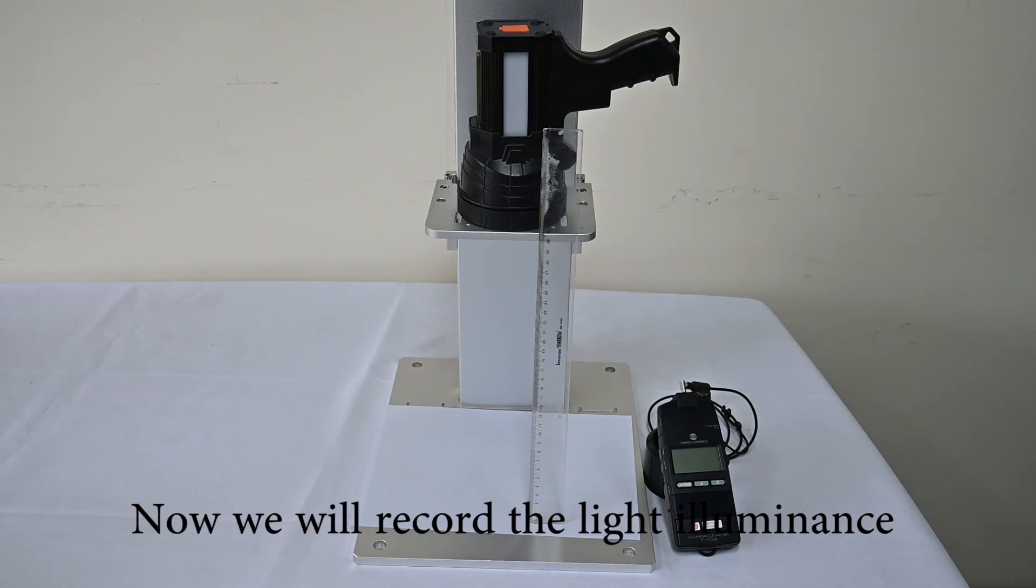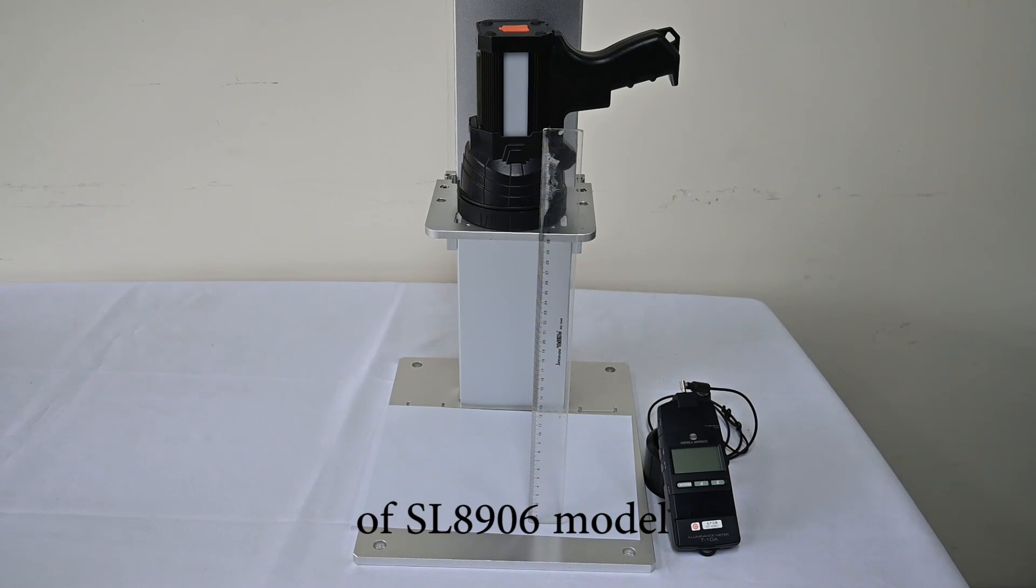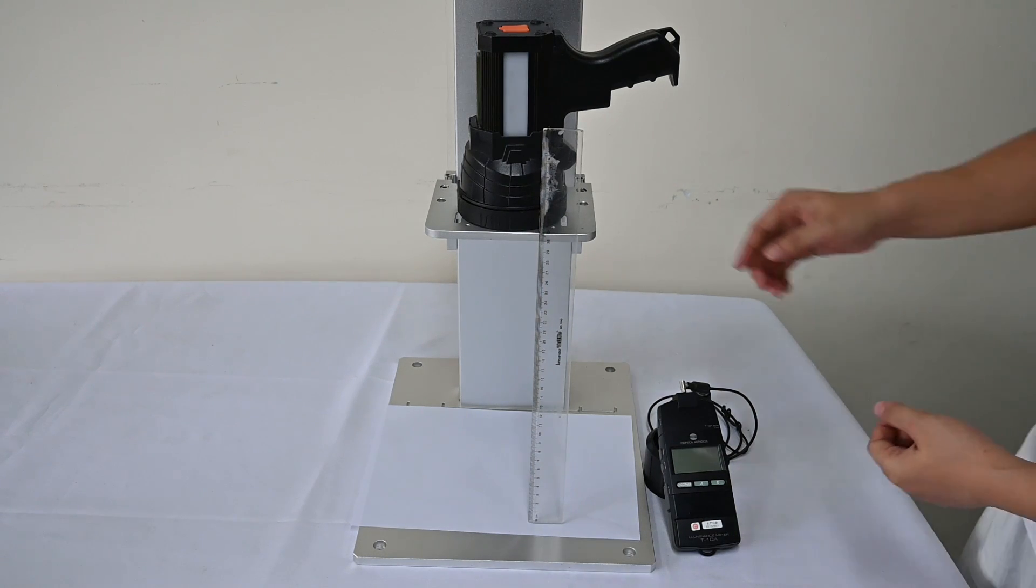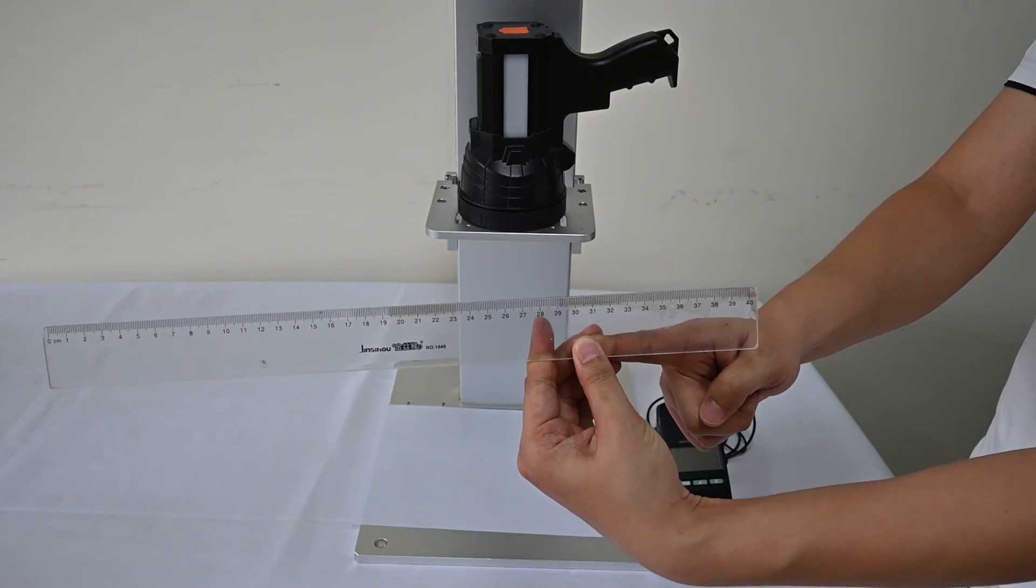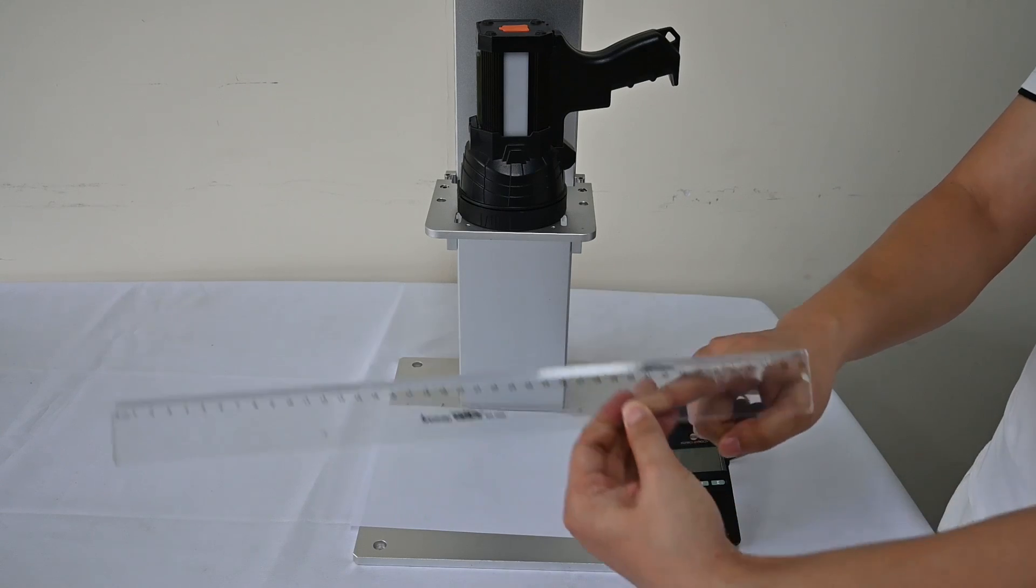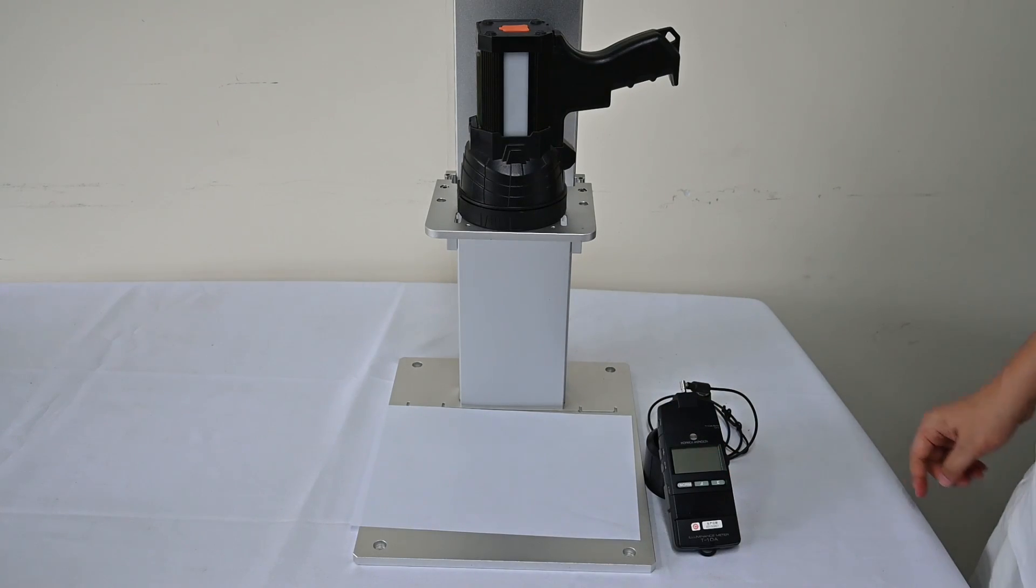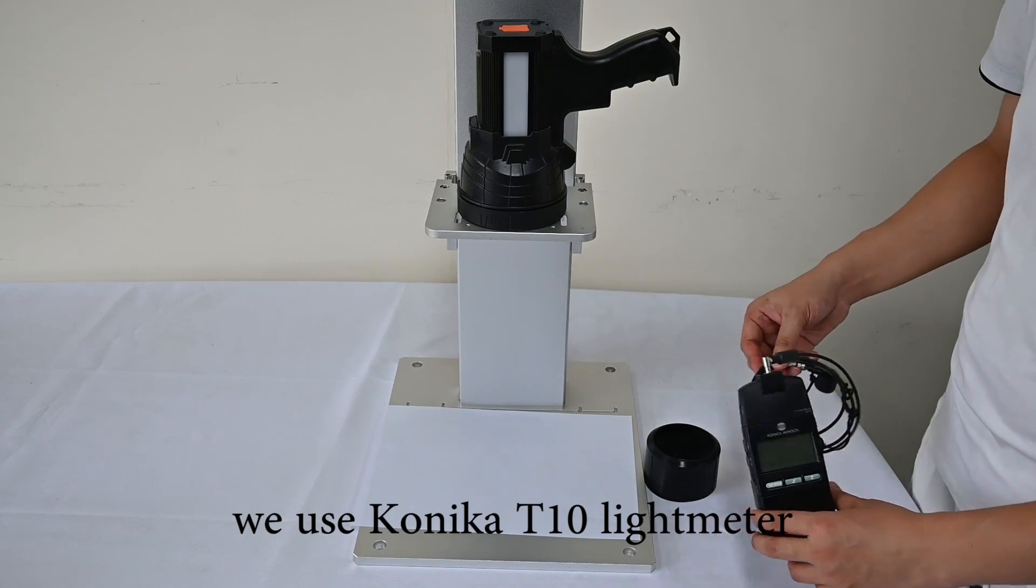Now, we will record the light illuminance of SL8906 model. And the test distance is 30 cm. And to ensure the accuracy, we use Kodica T10 light meter.